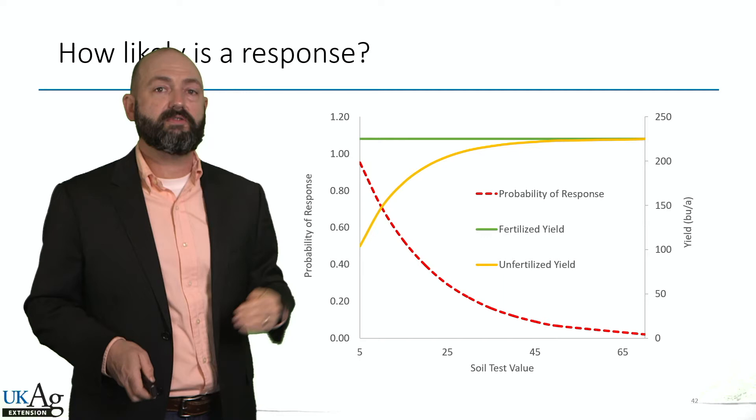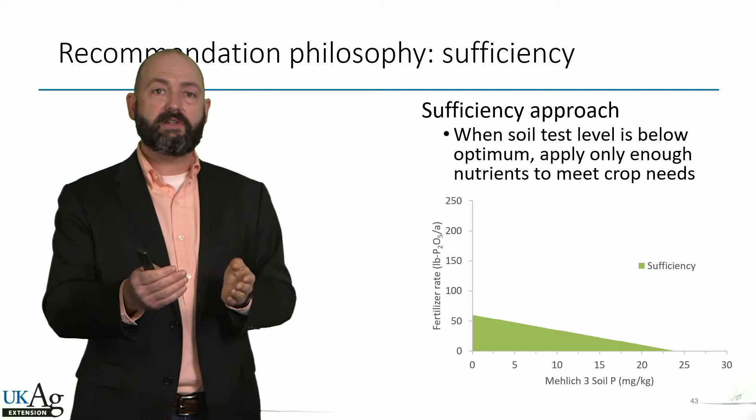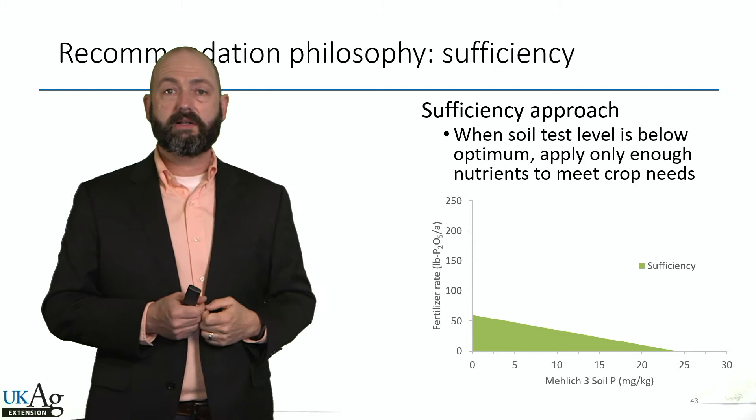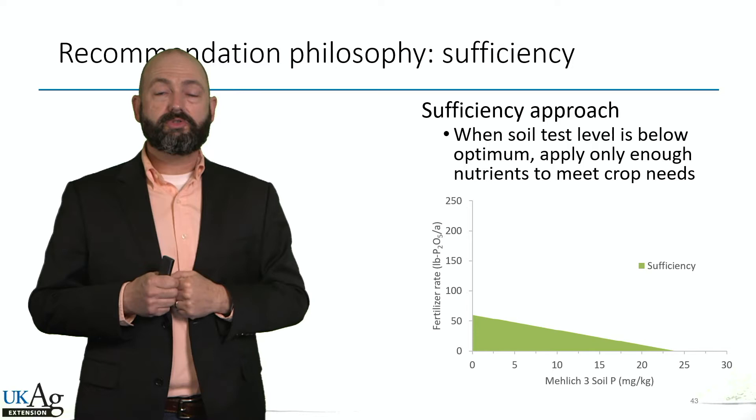We take that calibration and correlation data and now we're going to apply some personal philosophy. This is where the science starts backing up a little bit and we just start thinking about our risk tolerance and probability of response. The first philosophy is the sufficiency approach, which says: add only enough fertilizer to maximize the yield.